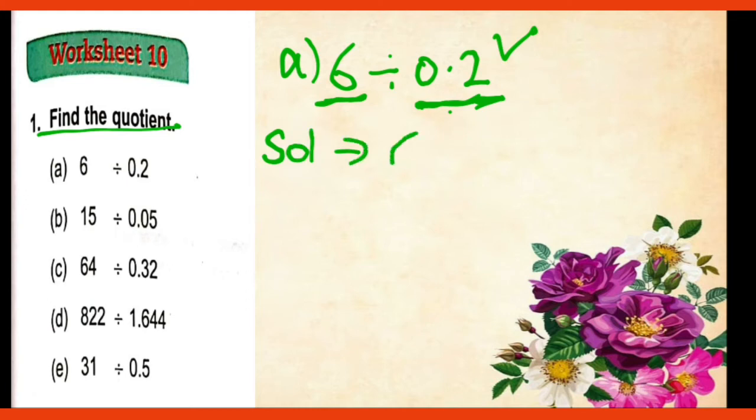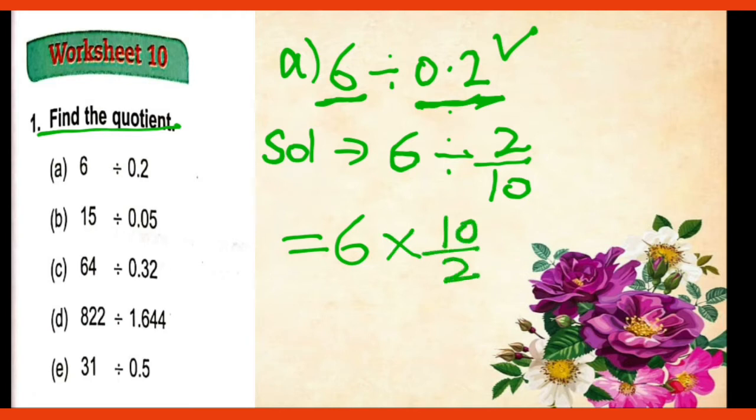So 6 is a whole number. So if you will write it to 6, then it will be okay. So 6 divided by 0.2 is 2 upon 10. Now the next step is, 6 or division sign converted into multiplication. And 2 upon 10 we take reciprocal 10 by 2.